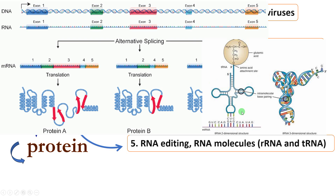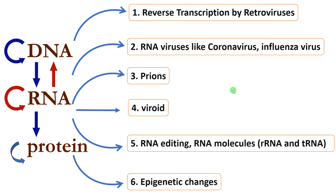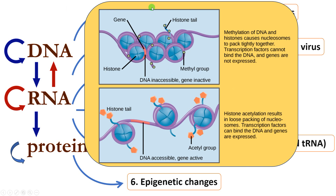The final exception is epigenetic changes — modifications in gene expression without changing the DNA sequence. The two most common epigenetic changes are methylation of DNA and acetylation of histones. In DNA methylation, as seen on the nucleosome, the wrapped DNA may be methylated, causing the nucleosome to pack tightly so that transcription factors cannot bind to the DNA, thus stopping gene expression. Gene expression is therefore regulated without changing the DNA sequence.